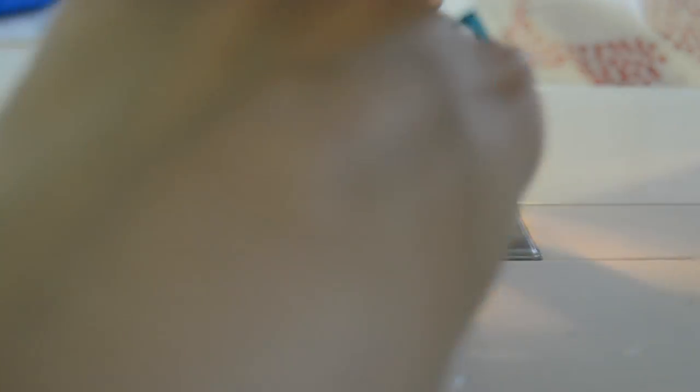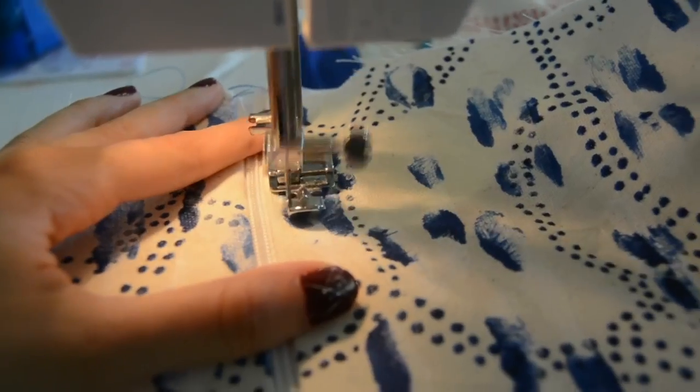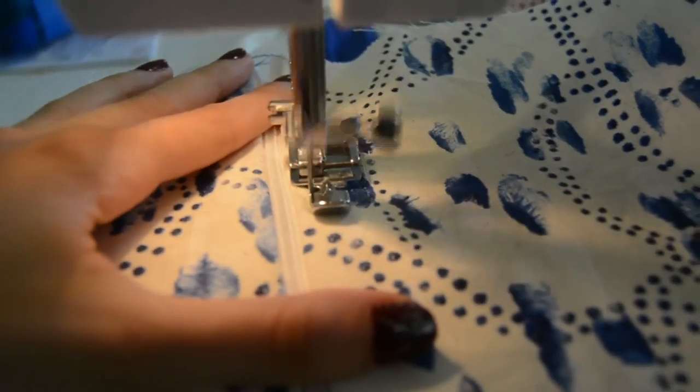The zipper that I have is longer than the actual measurement, but that's okay. Before topstitching, the ironing helps the fabric lay flat. Topstitch about one-fourth from the zipper.